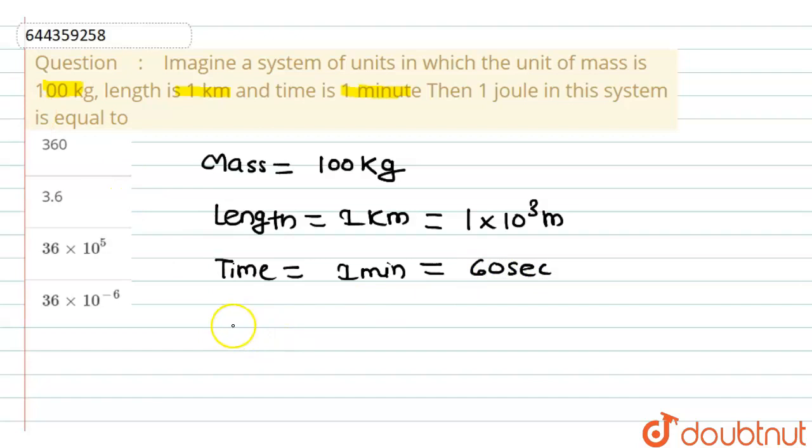Now we know that Joule is equivalent to kg into meter square upon second square because the kinetic energy has formula 1 by 2 mv square and the unit of kinetic energy is Joule, m stands for mass which has unit kg and velocity square, it means meter square divided by second square.